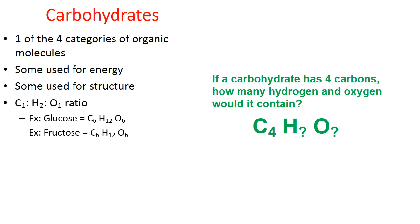Now if you know the one-to-two-to-one ratio, if I were to give you this question — pretend a carbohydrate has four carbons, how many hydrogens and oxygens would it contain? — I hope you would know the answer would be eight hydrogens and four oxygens.